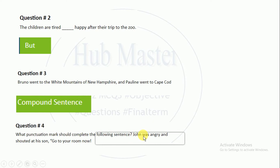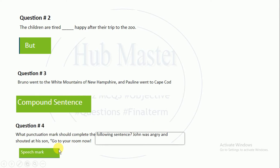What punctuation mark should complete the following sentence? 'John was angry and shouted at his son: Go to your room now.' This is a speech mark. Speech marks are also called inverted commas or quotation marks. If you are ordering something or saying something, we use speech marks in punctuation.